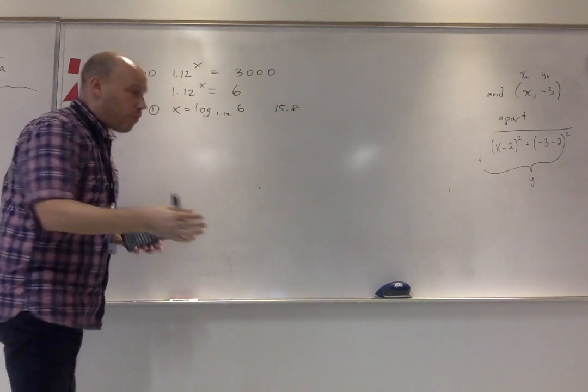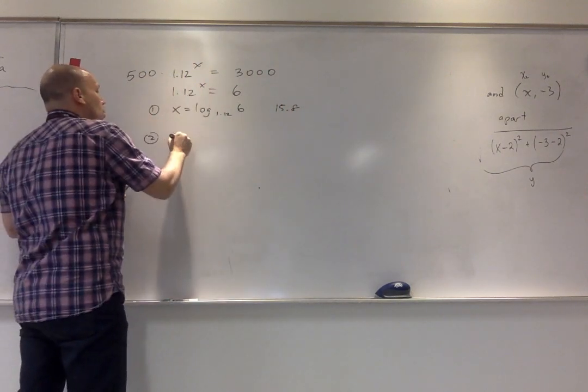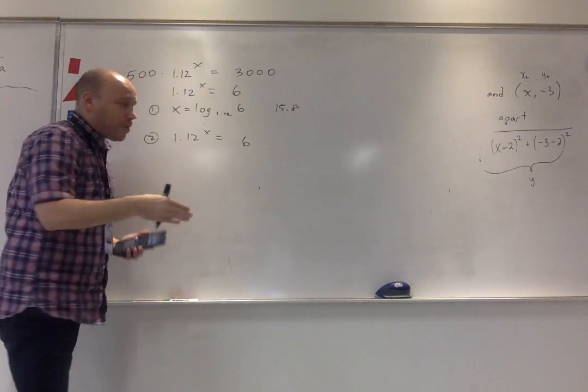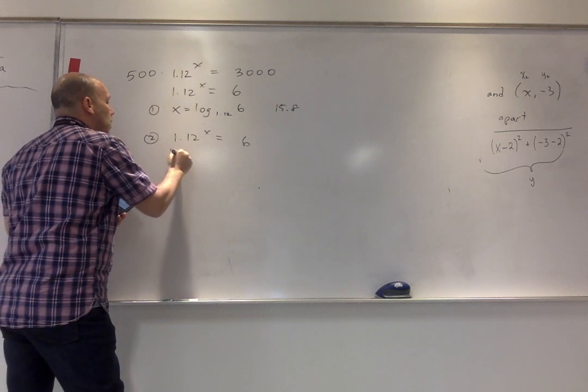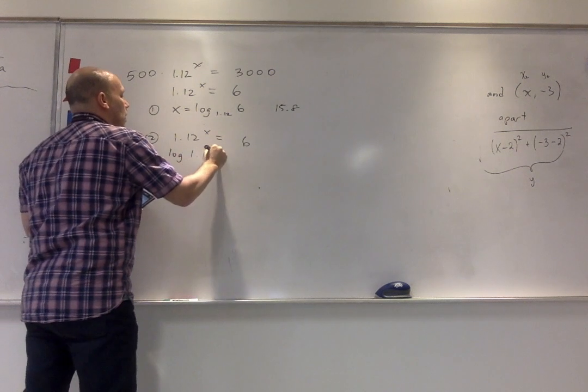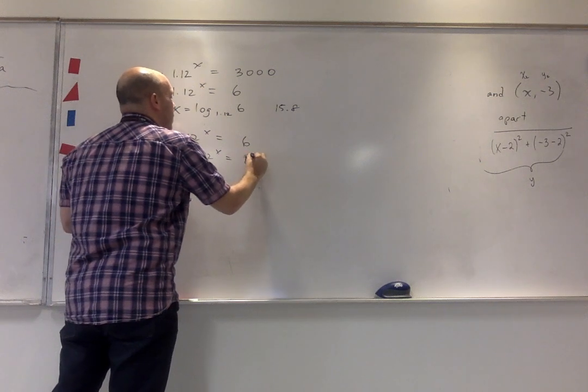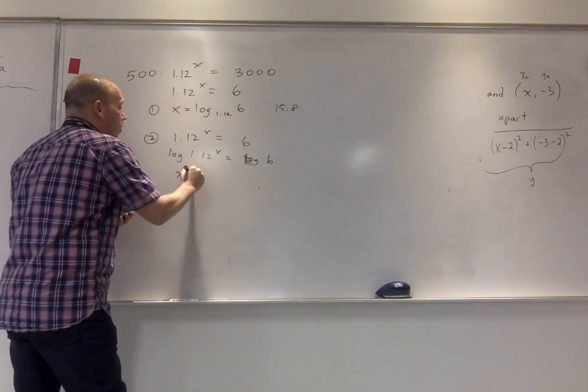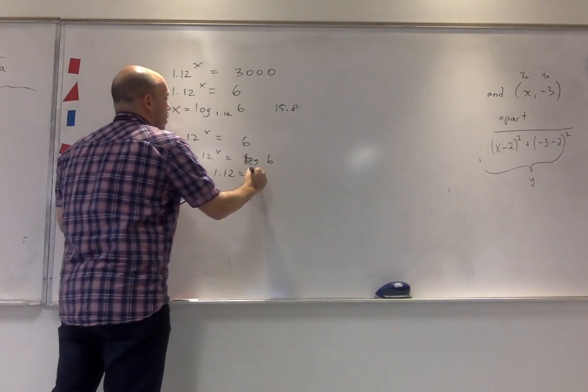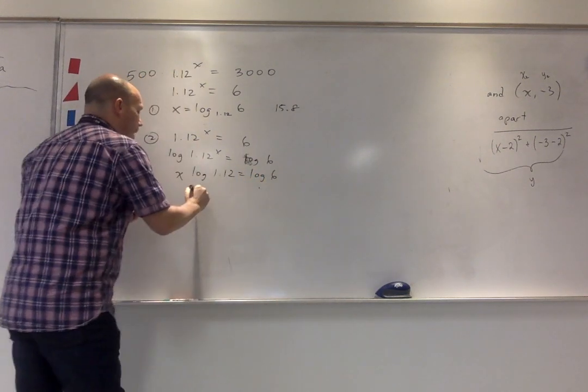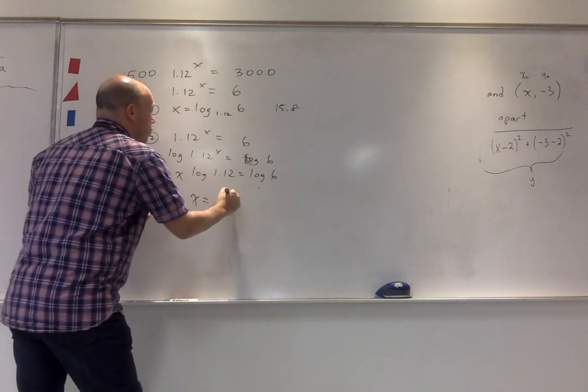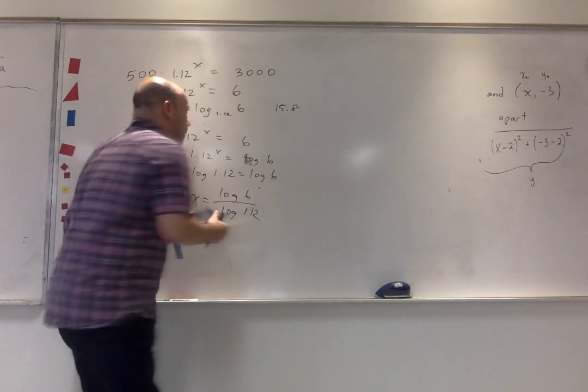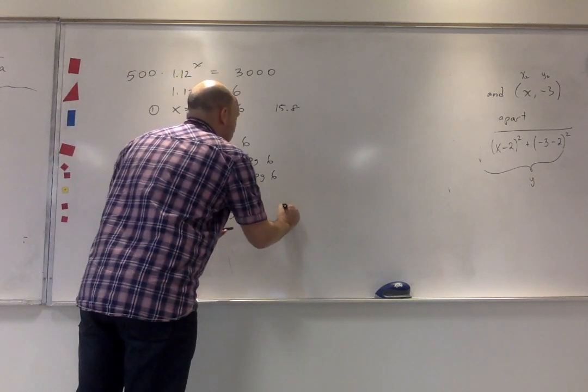Method 2, you've got this equation: 1.12 to the x equals 6. Older school says take the log of both sides. And then bring the x down. And then you solve for x. So this is how we used to have to do it. And then the answer is 15.8.